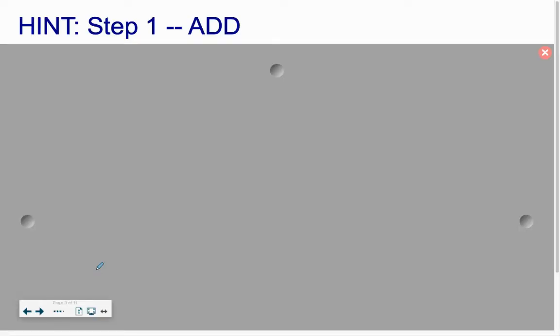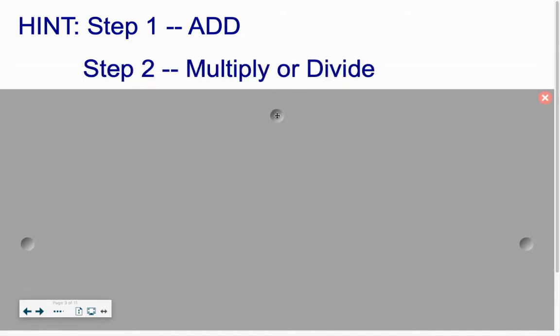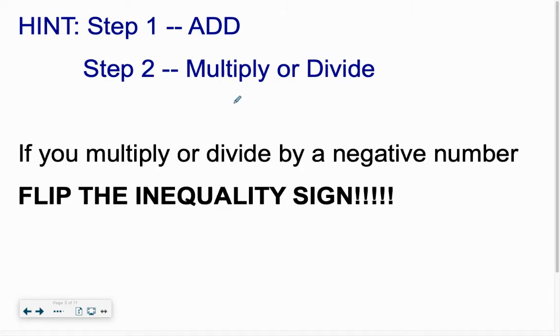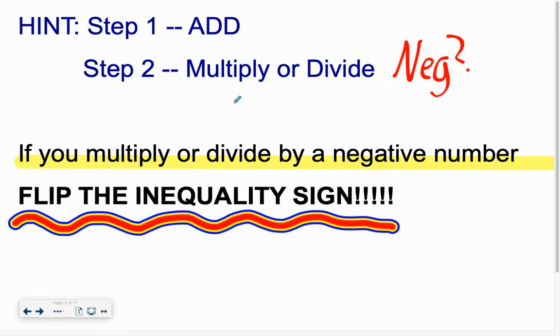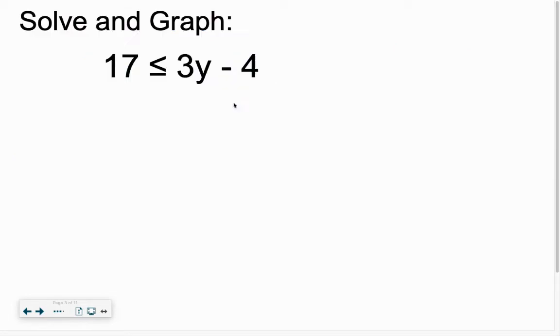We've got two steps. Lesson 3 was Multiply or Divide. When we get rid of this screen, you see the big thing we need to remember: Step 2, if you multiply or divide by a negative, flip the inequality sign. There are two steps. Step 1 is add something, then Step 2 we multiply or divide depending on that variable.